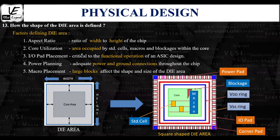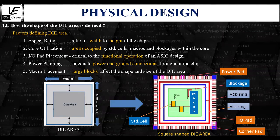The next factor is power planning. Before the actual placement of all components inside the core area, power planning must be completed to ensure adequate power and ground connections throughout the chip for smooth operation. The VDD and VSS structures surrounding the core area facilitate power distribution to all cells in the design, and this is another major factor influencing the layout of the die area.